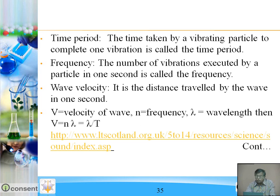Time period: the time taken by a vibrating particle to complete one vibration is called the time period. Frequency: the number of vibrations exhibited by a particle in one second is called the frequency. Wave velocity: it is the distance travelled by the wave in one second. In time period T, the wave travels a distance lambda, so velocity equals lambda upon T. But one upon T is frequency, therefore the formula becomes v equals n times lambda.